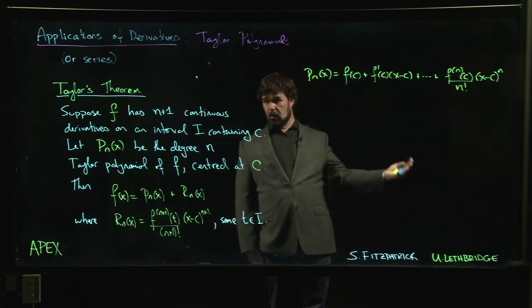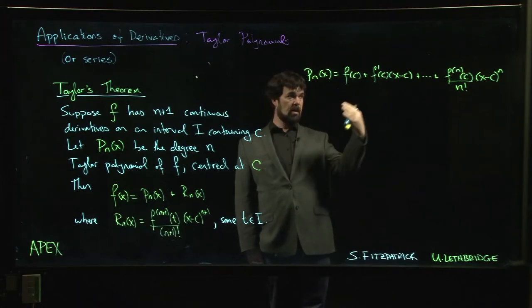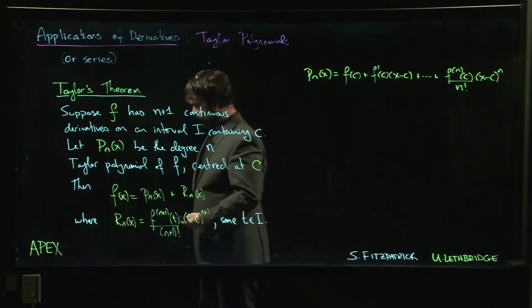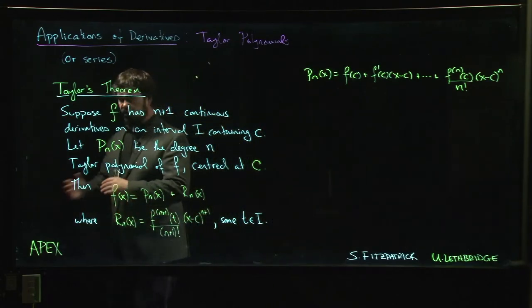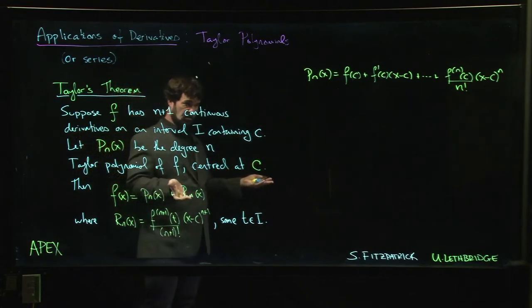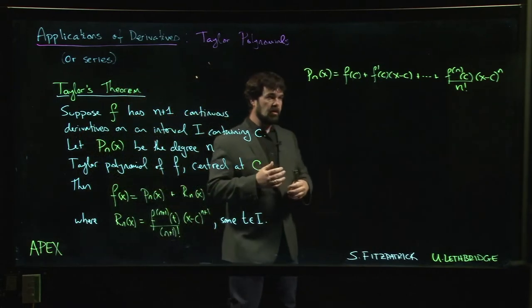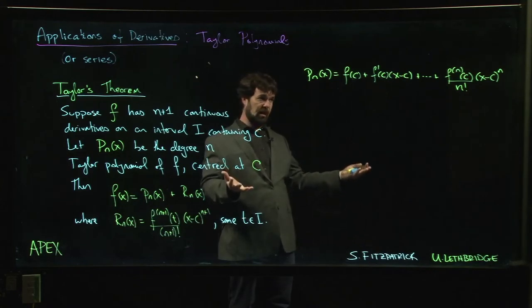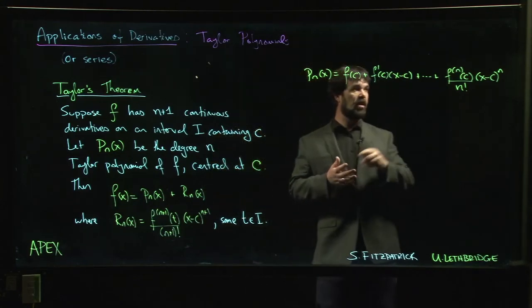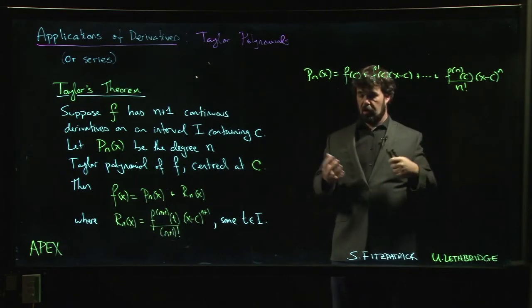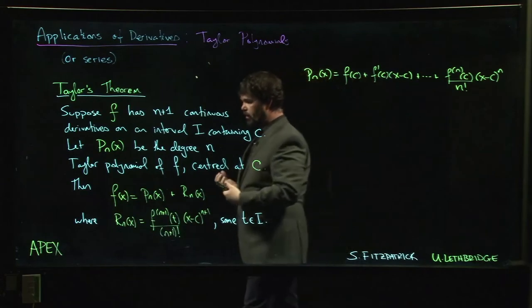Let's say you want to know the value of your function accurate up to six decimal places because that's what you're going to display. You need to be able to figure out how many terms do you need to put in your polynomial to give the value accurate to six decimal places at a particular point. How big does n have to be before I know I've got six decimal places?